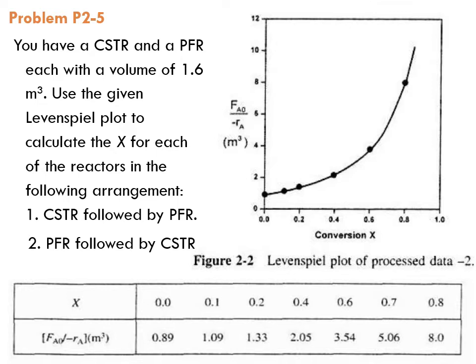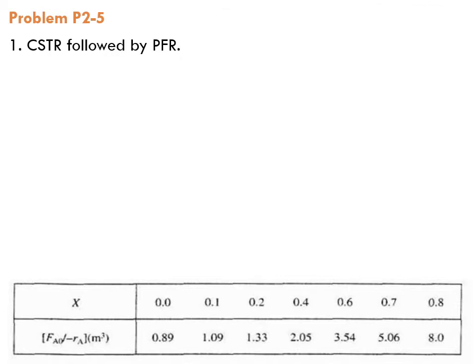So how do we solve this problem? As you can see, the kinetics data are given, so we have X and minus r_A. Therefore, we can calculate X versus F_A0 over minus r_A. In fact, I'm only going to show you the first portion of the first arrangement, which is CSTR followed by plug flow reactor.